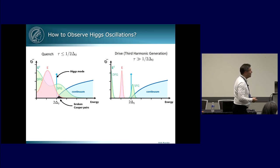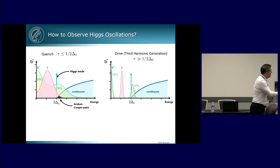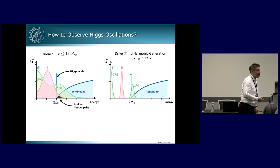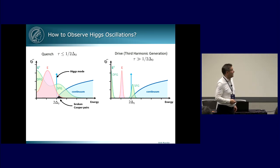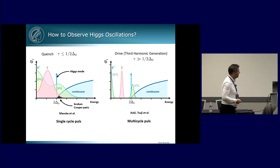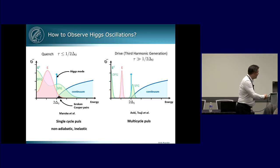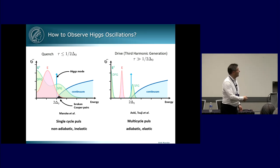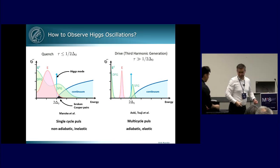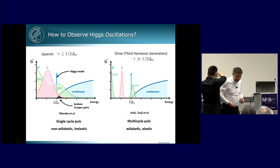So a few years later, theory colleagues in Tokyo came up with another mechanism. They call it drive, not so specific conditions on the pulses, just a multi-cycle. And the light is always on and not so short. And the cartoon would be like this. So it's more or less elastic because the energy is somehow in between, fully in the gap. So this was done by Aoki Sensei and Tsuji. So this is more single-cycle physics, multi-cycle. And if you wish, this is the non-adiabatic side. And this is more the adiabatic version of activating the Higgs mode.